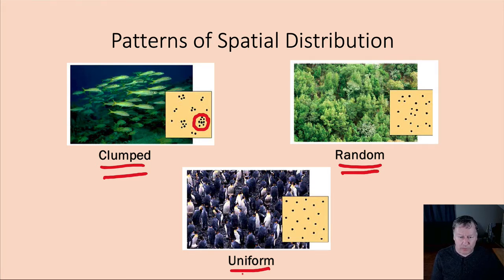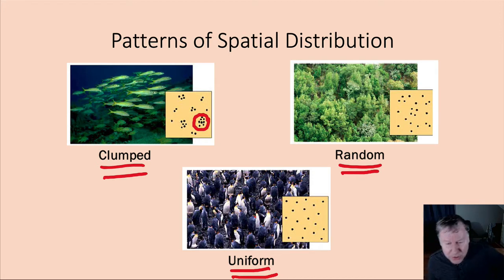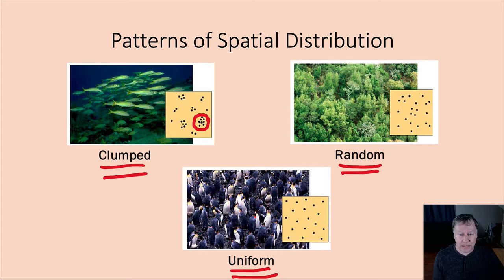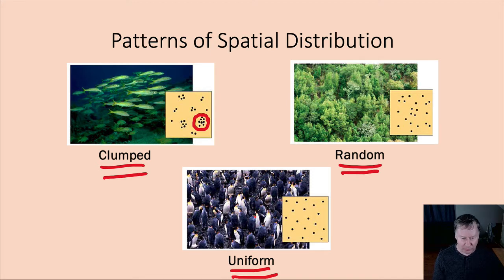Finally, there's the uniform distribution pattern, where there is an equal distance between each individual. These are most commonly seen in things humans do — when we plant crops, we tend to plant each one a specific distance from the previous one. It also occurs in the wild: penguins on nesting colonies form uniform distribution because each one sets up a nest just out of pecking range of its neighbor, making them roughly equidistant.